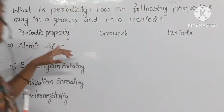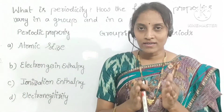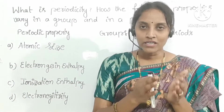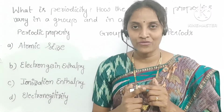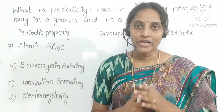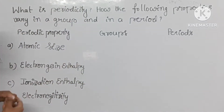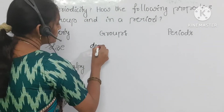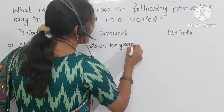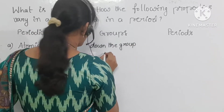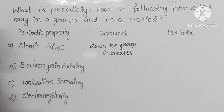The first property is atomic size. Atomic size is defined as the distance present between the center of the nucleus and the electron present in the outermost shell of an atom. Atomic size down the group increases.